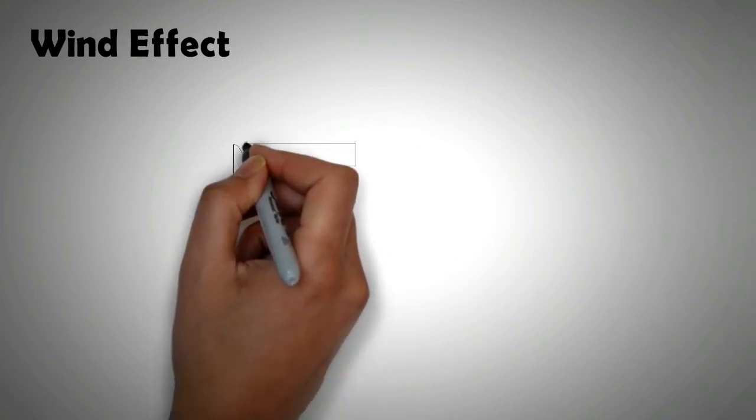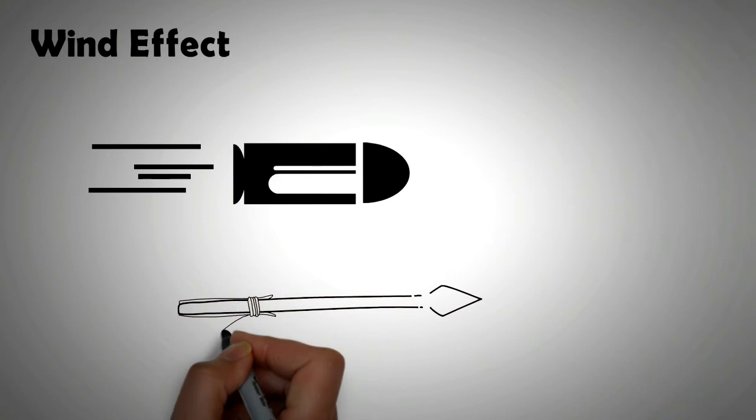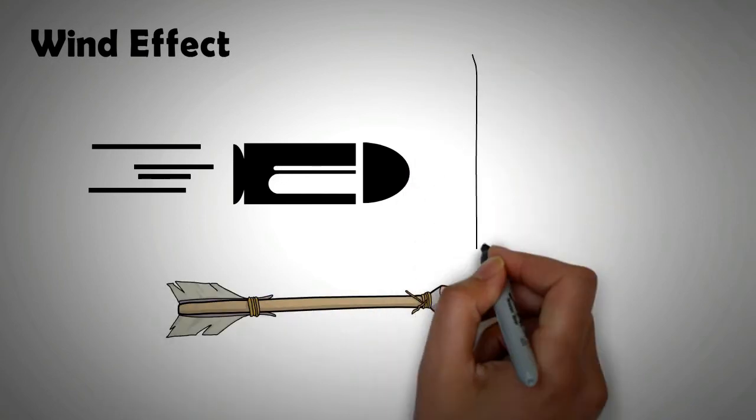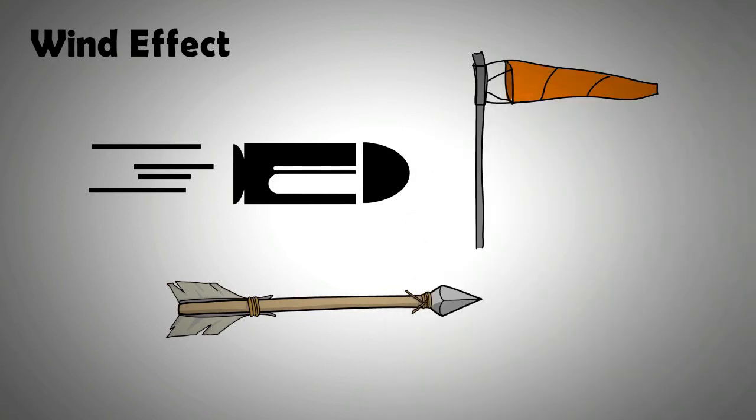Wind also plays a vital role in increasing or decreasing the range, and crosswinds can also make a bullet or the arrow drift. Headwinds can decrease the range while tailwinds can immensely increase the range. Both wind speed and direction are factored in by a sniper or an archer when taking a shot.